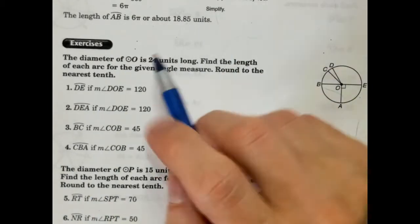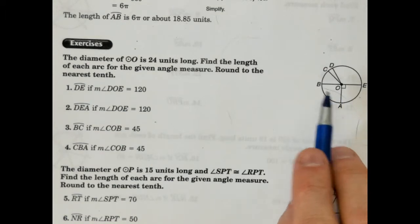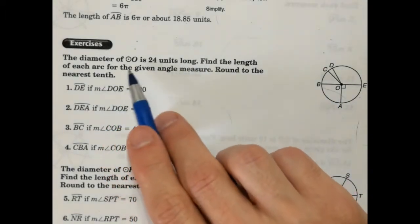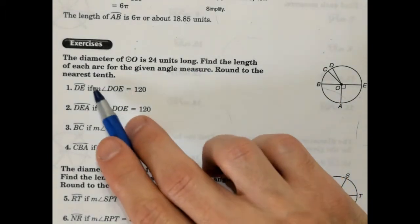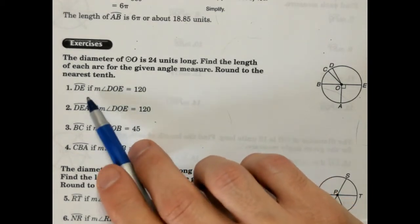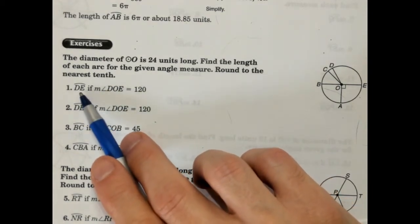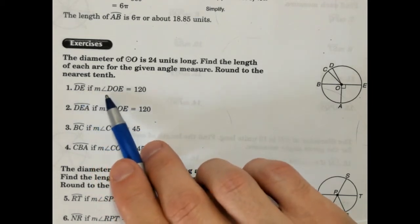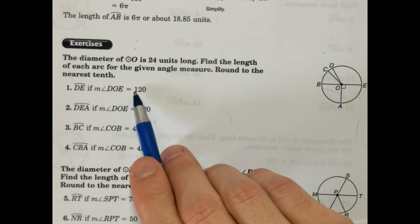So, let's start with the example. In the diameter of circle O, which is right here, find the length of each arc for the given angle measure, round to the nearest tenth. Okay, they tell us that find arc DE, the length of DE, if the measure of angle DOE is 120 degrees.